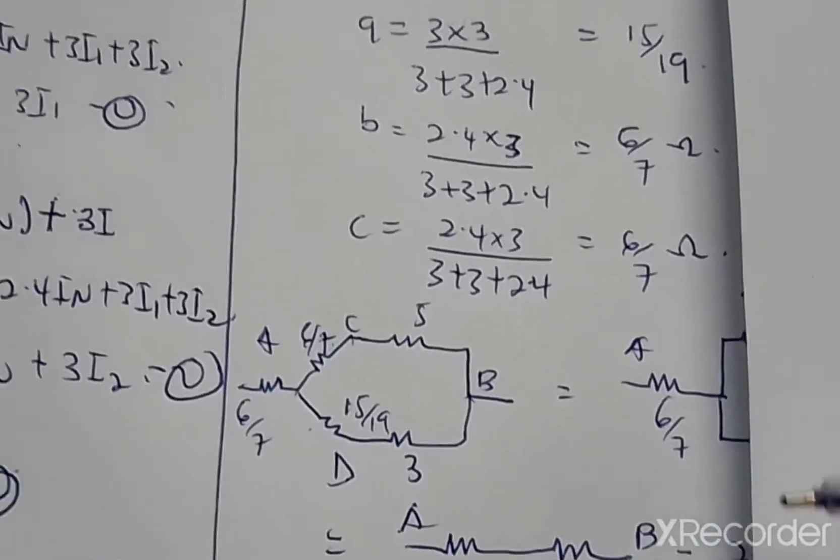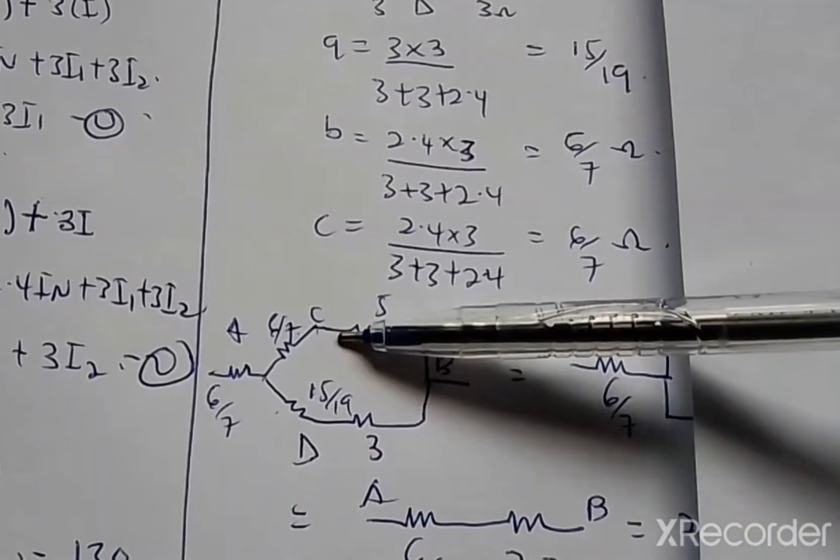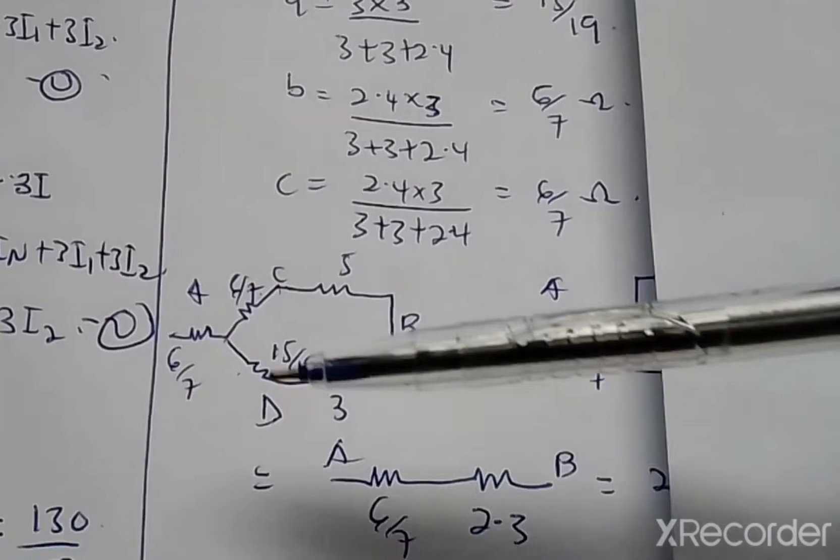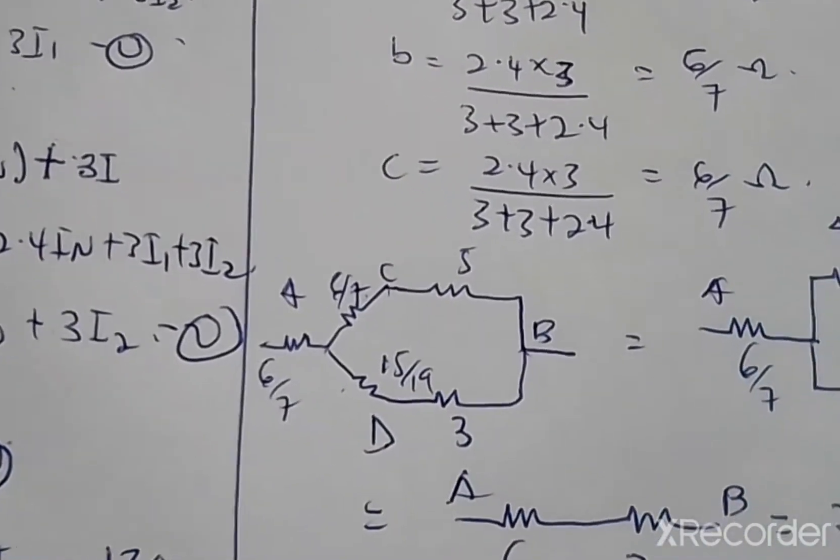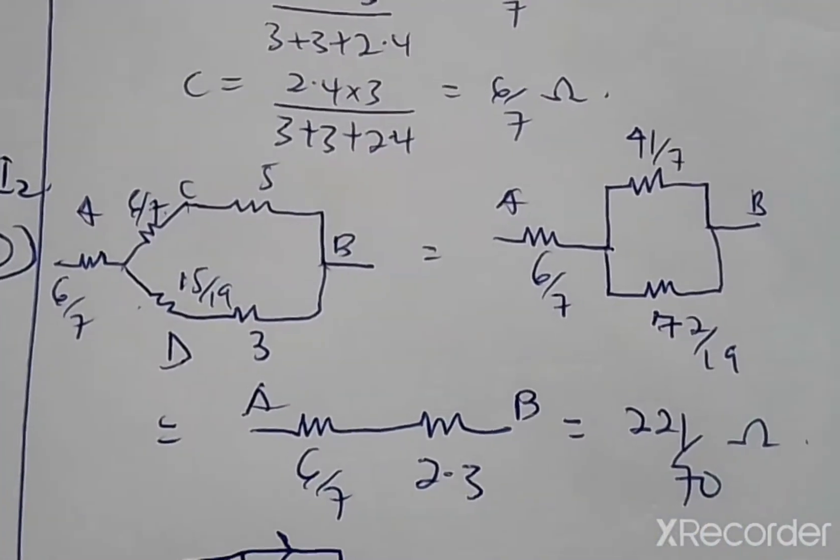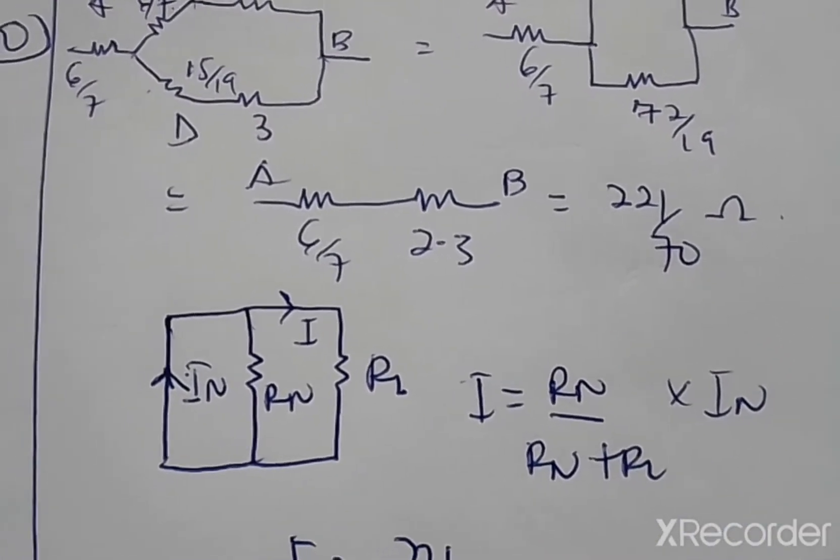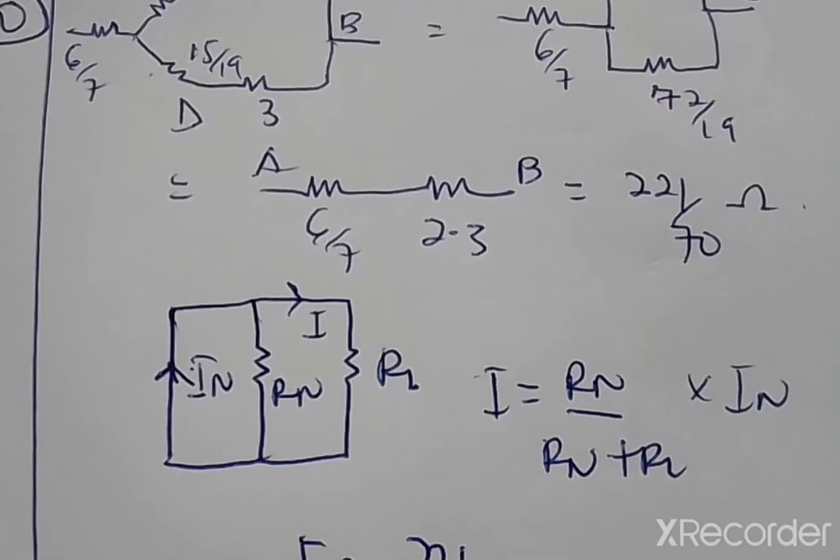From here you move ahead to redraw the circuit. You get this and this being in series, we simplify this. You redraw the circuit as this. So you find your total resistance, that's the RN. From here you redraw and find your Norton's equivalent resistance.